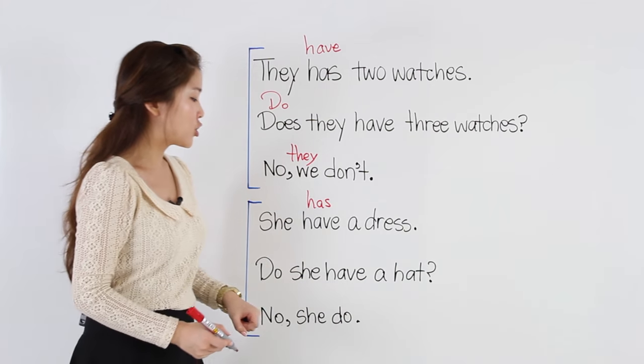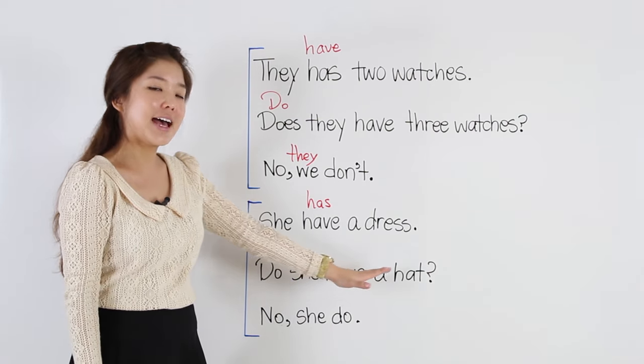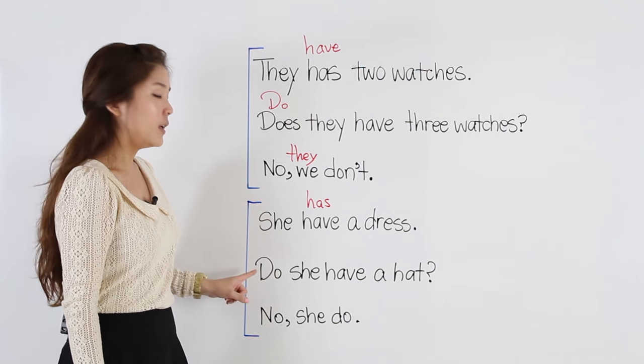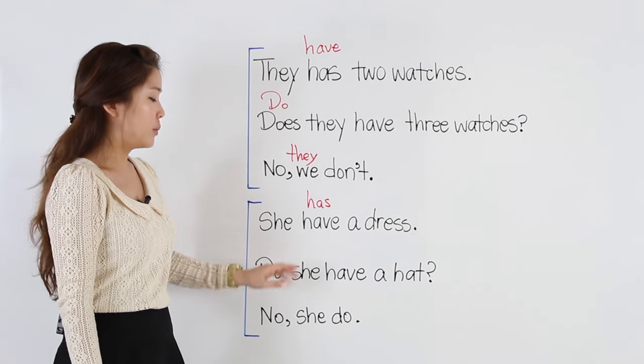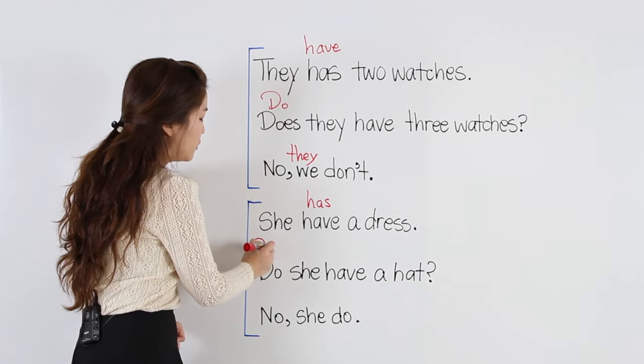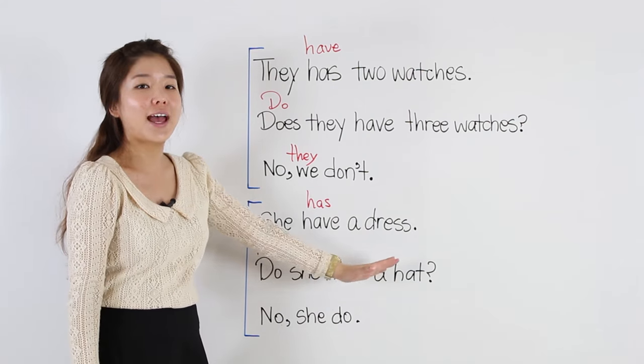How about in the question, do she have a hat? Remember, we begin with do or does, but for she, we should begin with does. Does she have a hat?